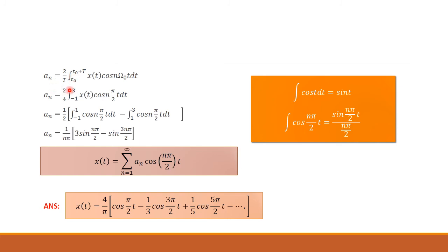Next, we find aₙ. aₙ = (2/T) ∫[t₀ to t₀+T] x(t) cos(nω₀t) dt = (2/4) ∫[minus 1 to 3] x(t) cos(nπ/2 · t) dt, since ω₀ = π/2. We split the integration and apply the limits. Knowing that ∫cos(nπ/2 · t) dt = sin(nπ/2 · t) / (nπ/2).